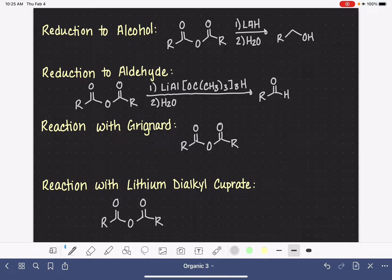For a reaction with a Grignard, we need, again, excess of our Grignard in step one, excess RMgBr, followed by water or H3O+.